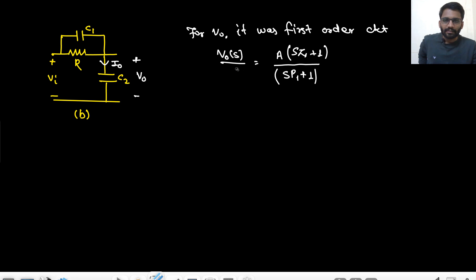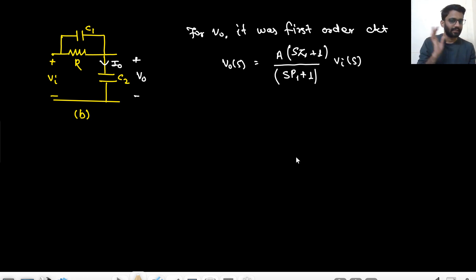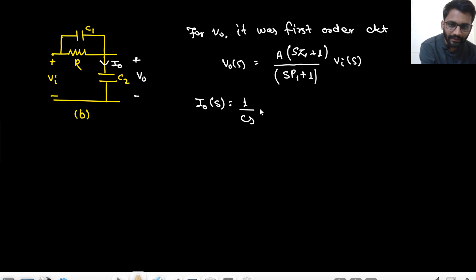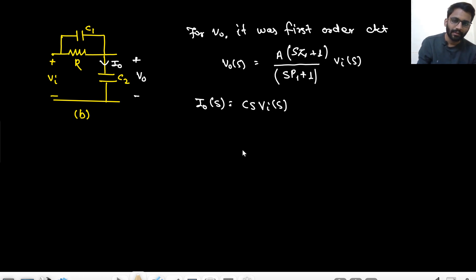You can write V_out(s) = A × (s/z1 + 1) / (s/p1 + 1) × V_in(s). Now what will be I_out(s)? For a capacitor, I = C × dVc/dt, so in the s-domain I_out(s) = C·s × V_c(s).